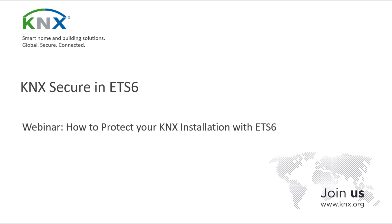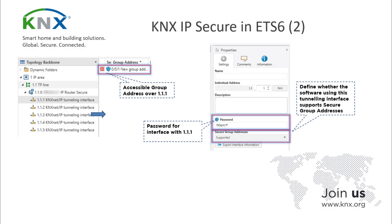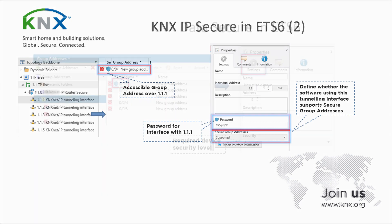In ETS6, the KNX Secure level of IP devices like the IP routers is part of the device properties. For such devices when Backbone is secure, it is needed to set the level to activated. The KNX Secure level of IP interfaces is also part of the device properties. For external visualization access via additional tunneling interfaces, an interface password and a group address explicitly assigned to the interface is needed.